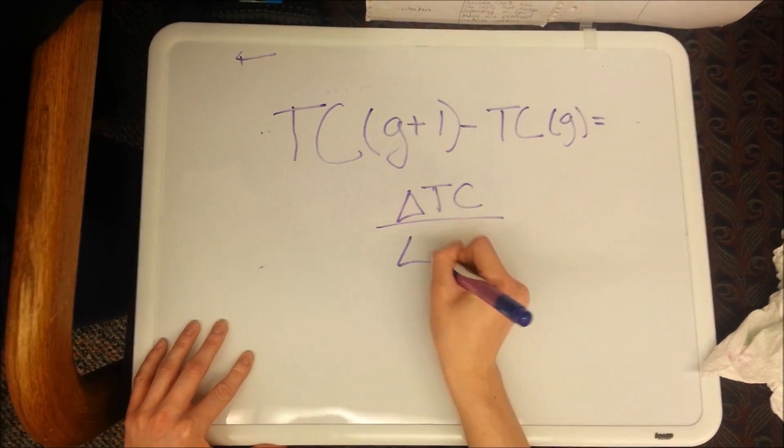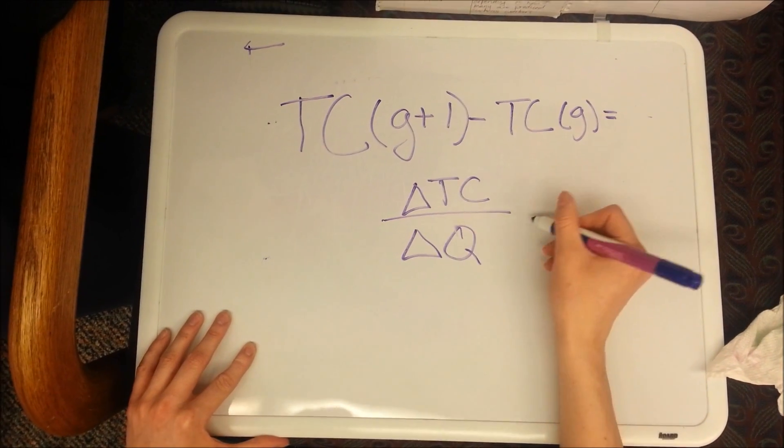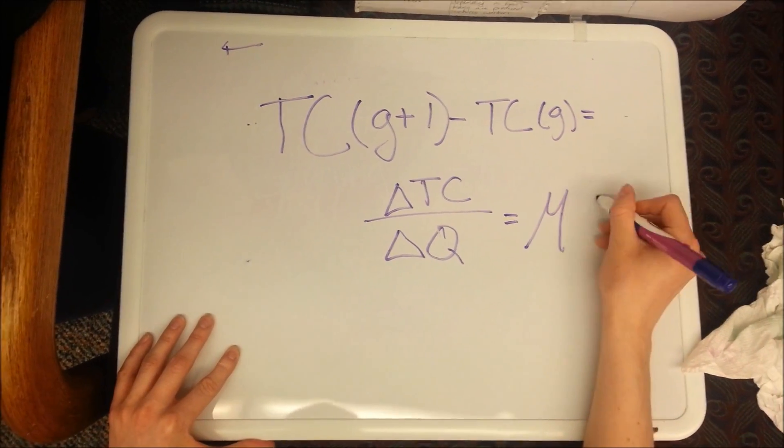By taking this value and dividing it by the change in quantity, we are able to obtain the marginal cost.